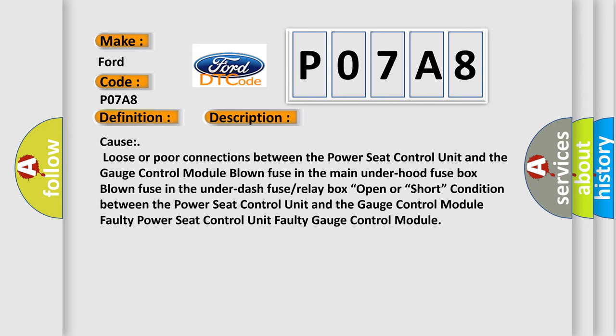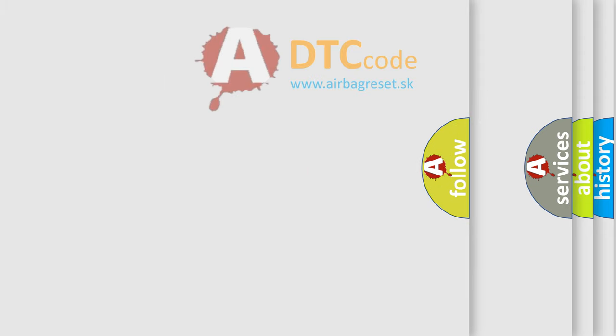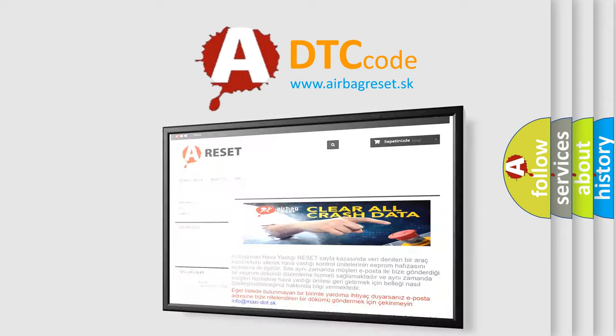Cause: loose or poor connections between the power seat control unit and the gauge control module; blown fuse in the main under hood fuse box; blown fuse in the under dash fuse relay box; open or short condition between the power seat control unit and the gauge control module; faulty power seat control unit; faulty gauge control module. The airbag reset website aims to provide information in 52 languages. Thank you for your attention.